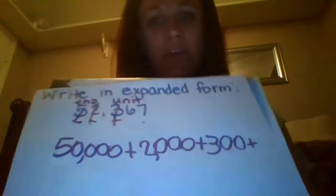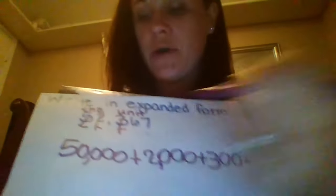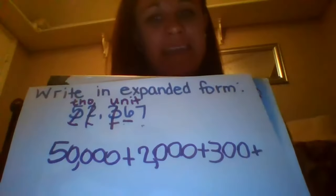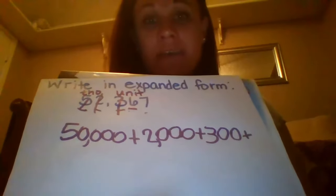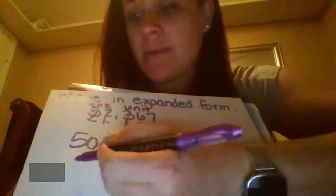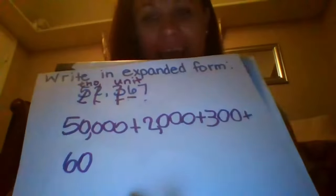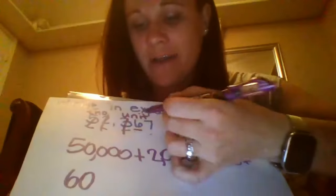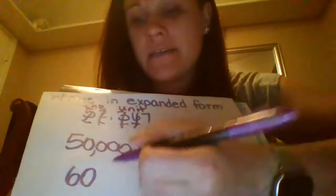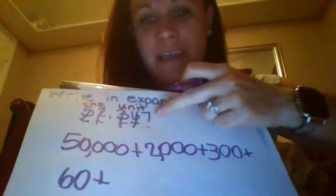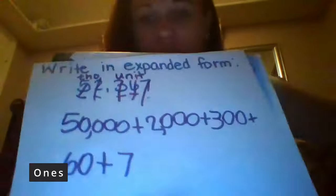I ran out of room so I'm just gonna pop it down here — that's okay if you need to jump below, because these numbers get pretty big when you expand them. My next number is six, and it's in the tens spot, so its value is sixty — I write six with one zero behind it. My last number is seven, and it's just in the ones place, so there are no zeros behind it — it's simply seven.